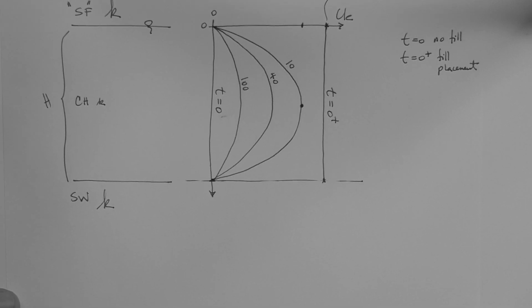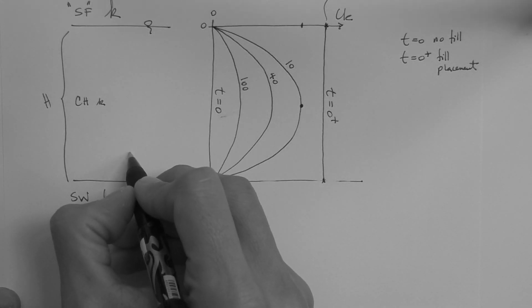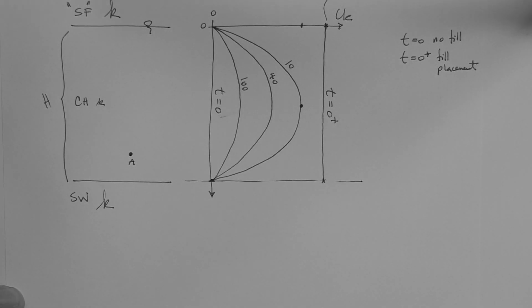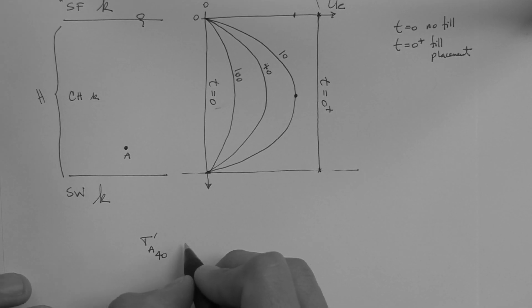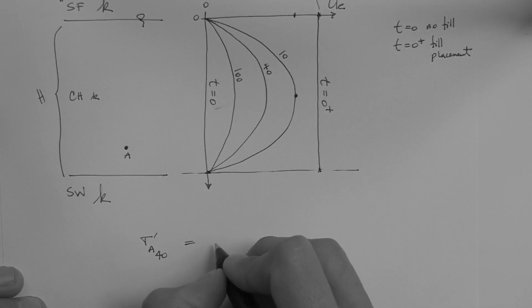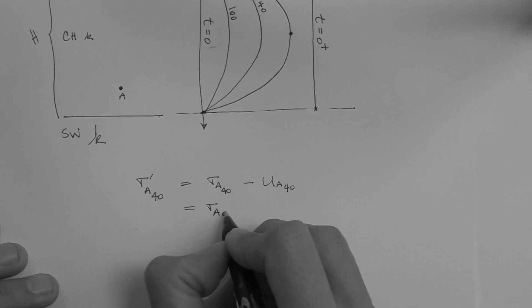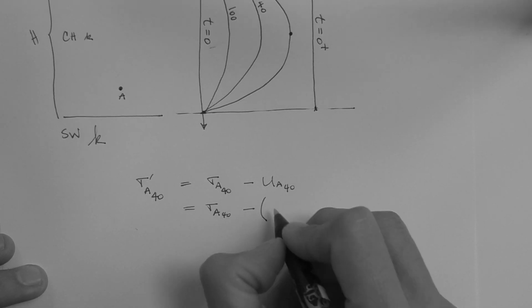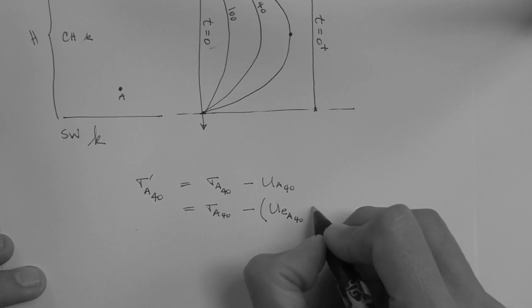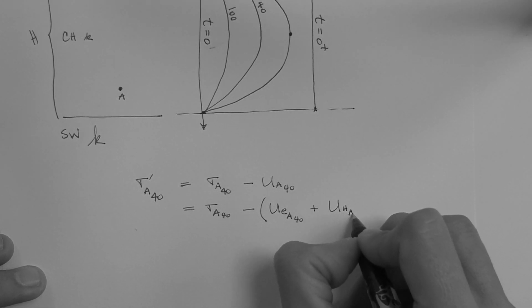So, let's say that we are evaluating the stresses at a given point inside the layer, somewhere here. This is point A. Let's say that we wanted to know the effective stress at point A at 40 days after fill placement. We would have to write the effective stress equation, which would be sigma minus U. So, the sigma would be sigma A at 40 days, minus U at A at 40 days. Sigma A at 40 days, this is the total pore pressure, which is the excess pore pressure at A at 40 days, plus the hydrostatic pore pressure at A at 40 days.